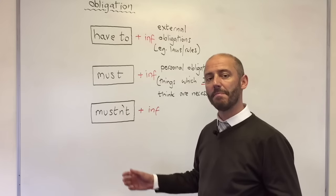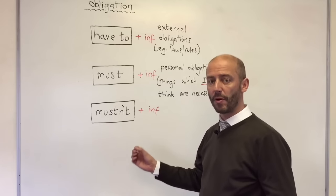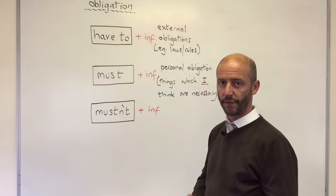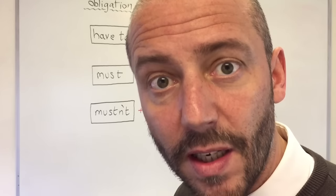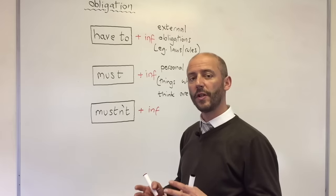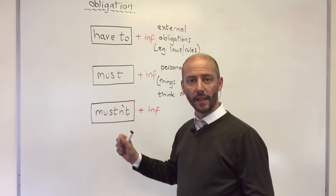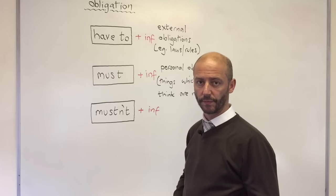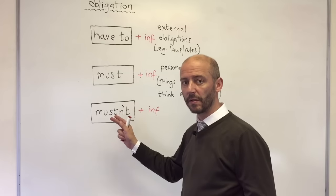Now let's look at mustn't. We use mustn't for prohibition and negative obligation. For example: you mustn't smoke in here; you mustn't make a noise — the children are sleeping. So we use mustn't for obligation: you must be quiet, you mustn't make a noise; you have to be quiet, you mustn't make a noise.